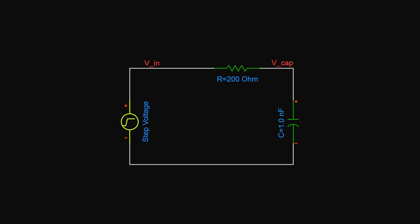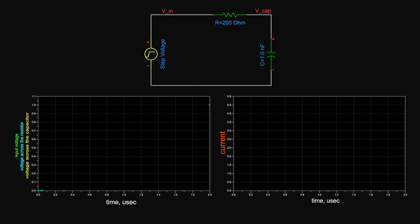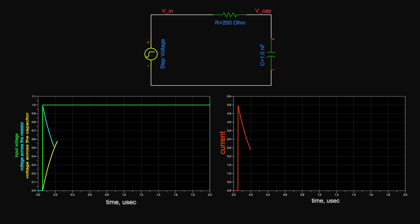If we have a series RC circuit with a capacitor initially discharged, by applying a step input voltage signal, at first the voltage across the capacitor is zero. Hence the current flowing in the circuit is equal to the voltage across the resistor divided by the resistor value. That current charges up the cap, increasing the voltage across it, and lowering the voltage across the resistor, hence lowering the current.